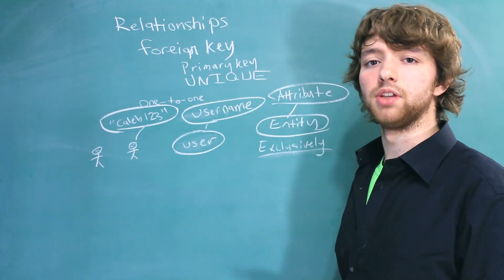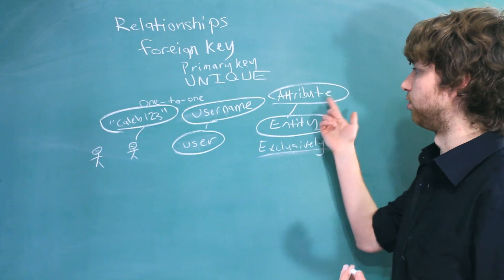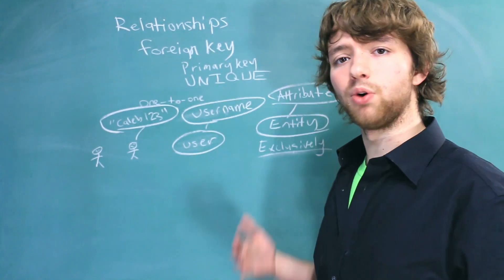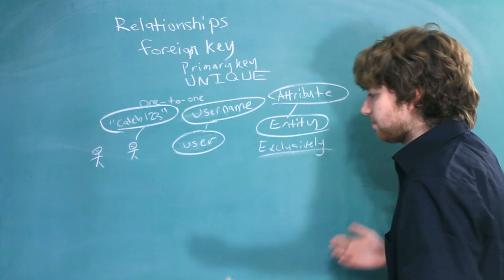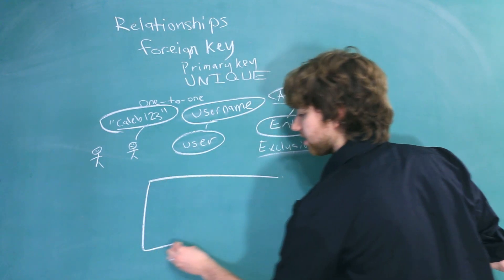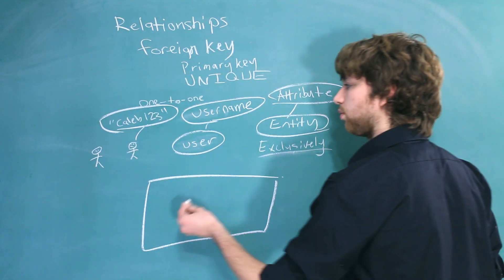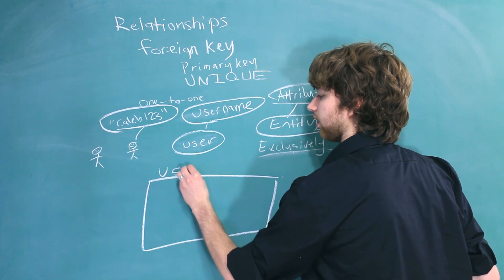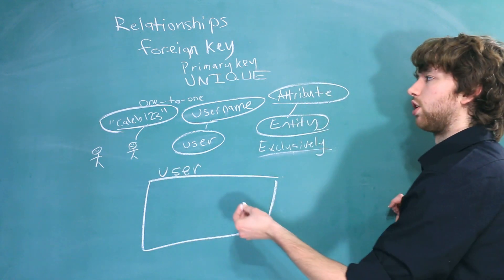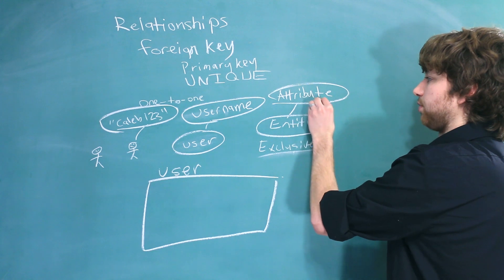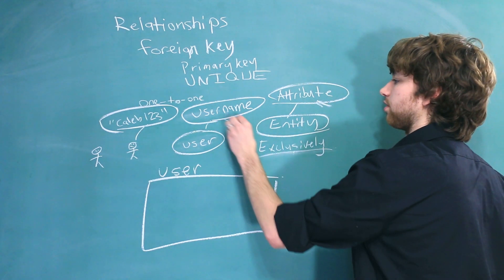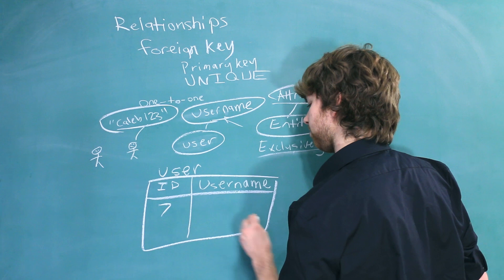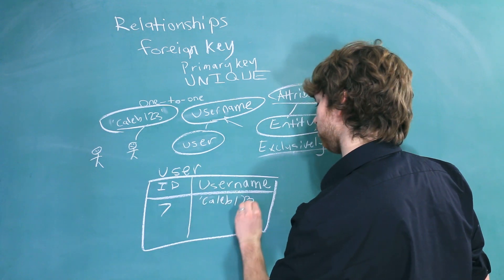Now that we understand that a one-to-one relationship is simply an attribute that describes an entity, how do we store this? We just store it as a column inside of a table. The table is designated for that entity. So we would have a user table, and one of the columns would be whatever the attribute is — in this case, the username. So we could have a user with the ID of 7 and the username Caleb123.